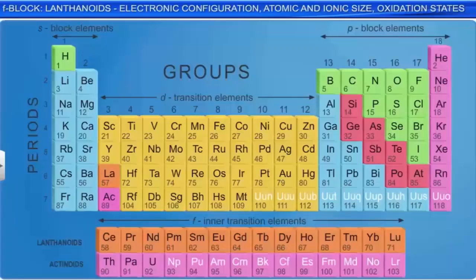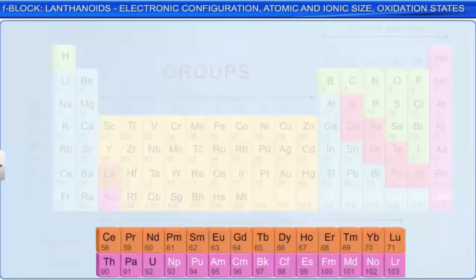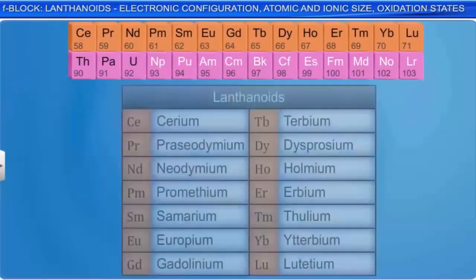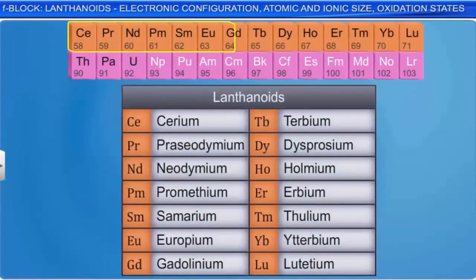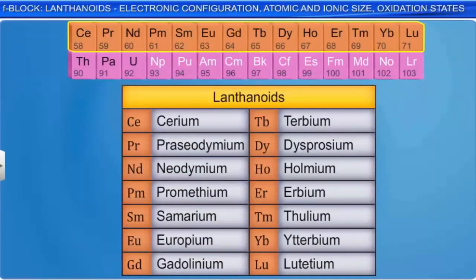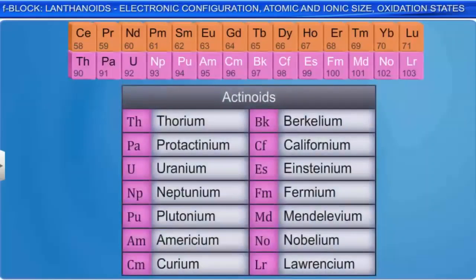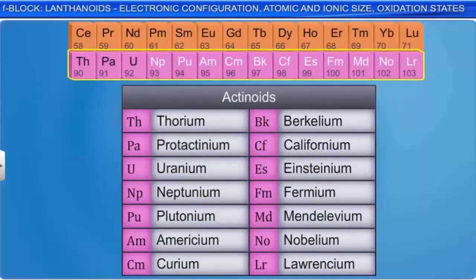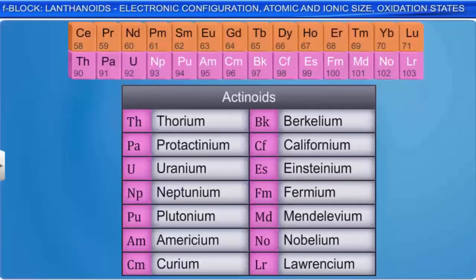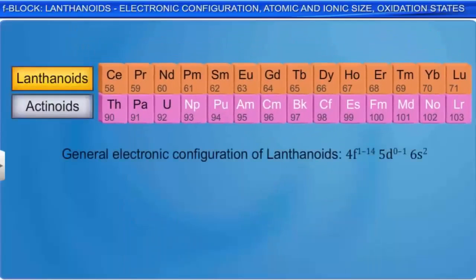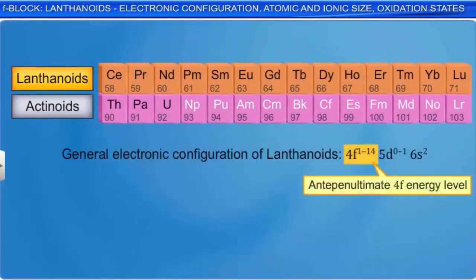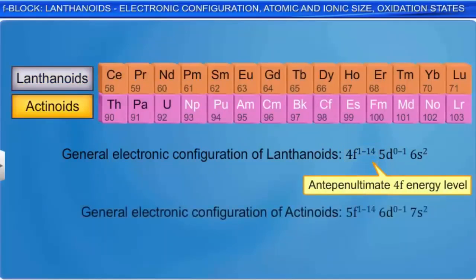The two rows of elements at the bottom of the periodic table constitute the F-block elements. These include the 14 elements from cerium to lutetium, called the lanthanoids, and the 14 elements from thorium to laurentium, called the actinoids. While lanthanoids are characterized by the filling up of the anti-penultimate 4F energy level, actinoids are characterized by the filling up of the 5F energy level.